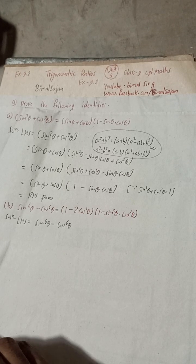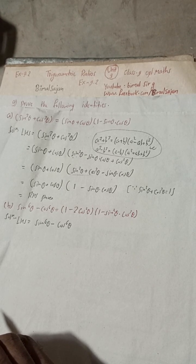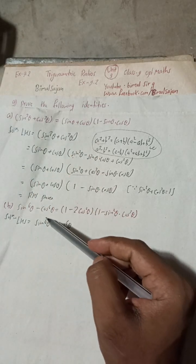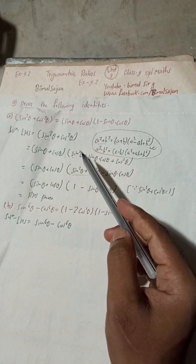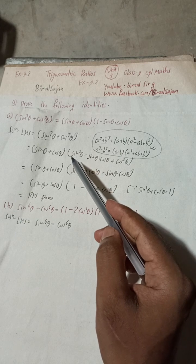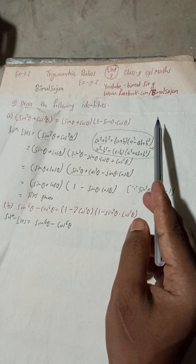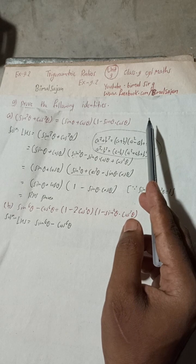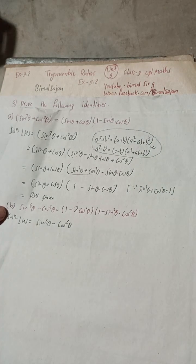Hi everybody, welcome back to Beamar Sarji YouTube channel. This is question number 9B of Exercise 9.2, Trigonometric Ratios, Class 9 Optional Mathematics. You can check the playlist — you will get many more solutions of Class 9 and 10. Now let's begin the solution.